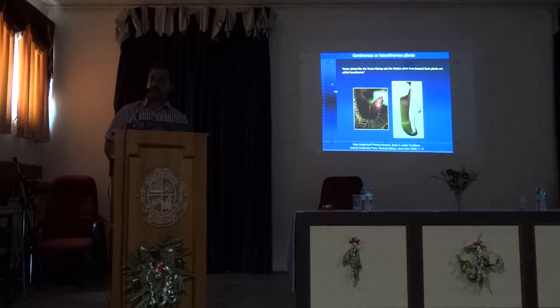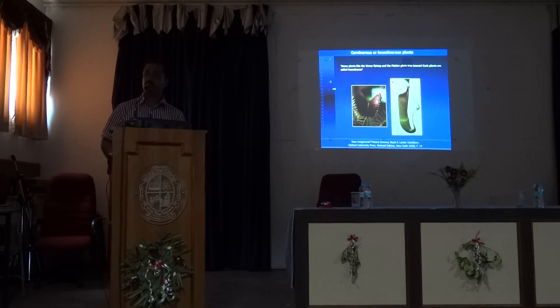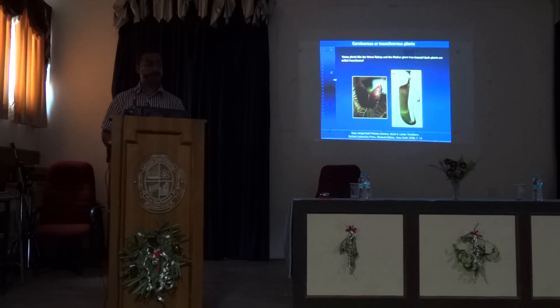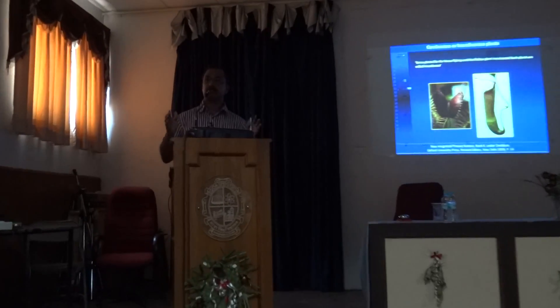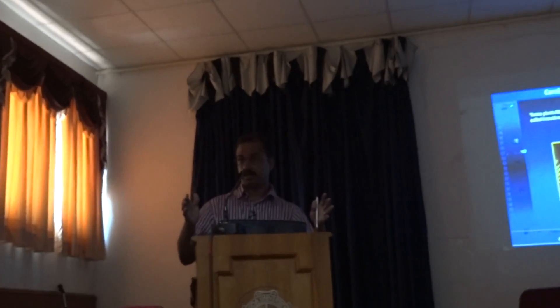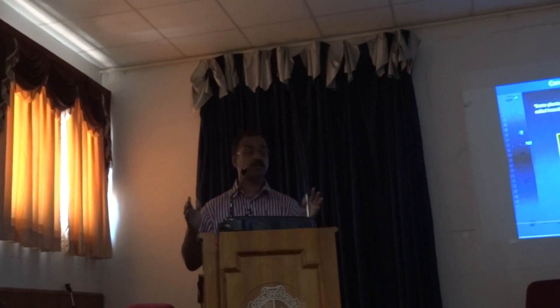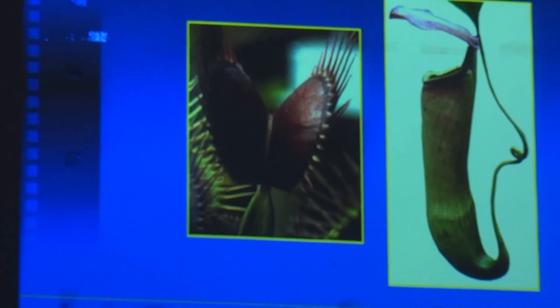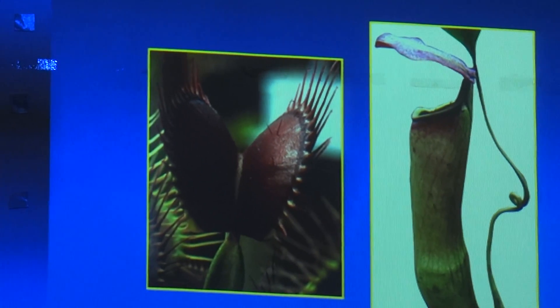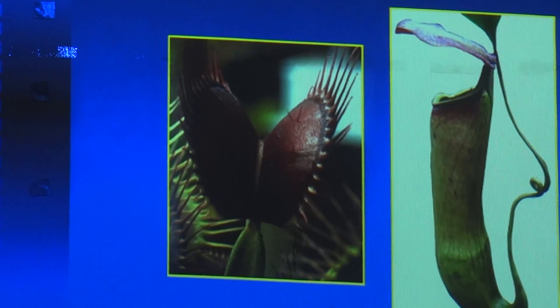A Venus Flytrap paper appeared in Nature in 2004. The title of the paper is 'How the Venus Flytrap Snaps.' I think that is the fastest movement in the plant kingdom that has been explained in that paper. So this is there in a primary class textbook and also there is a Nature paper on this.